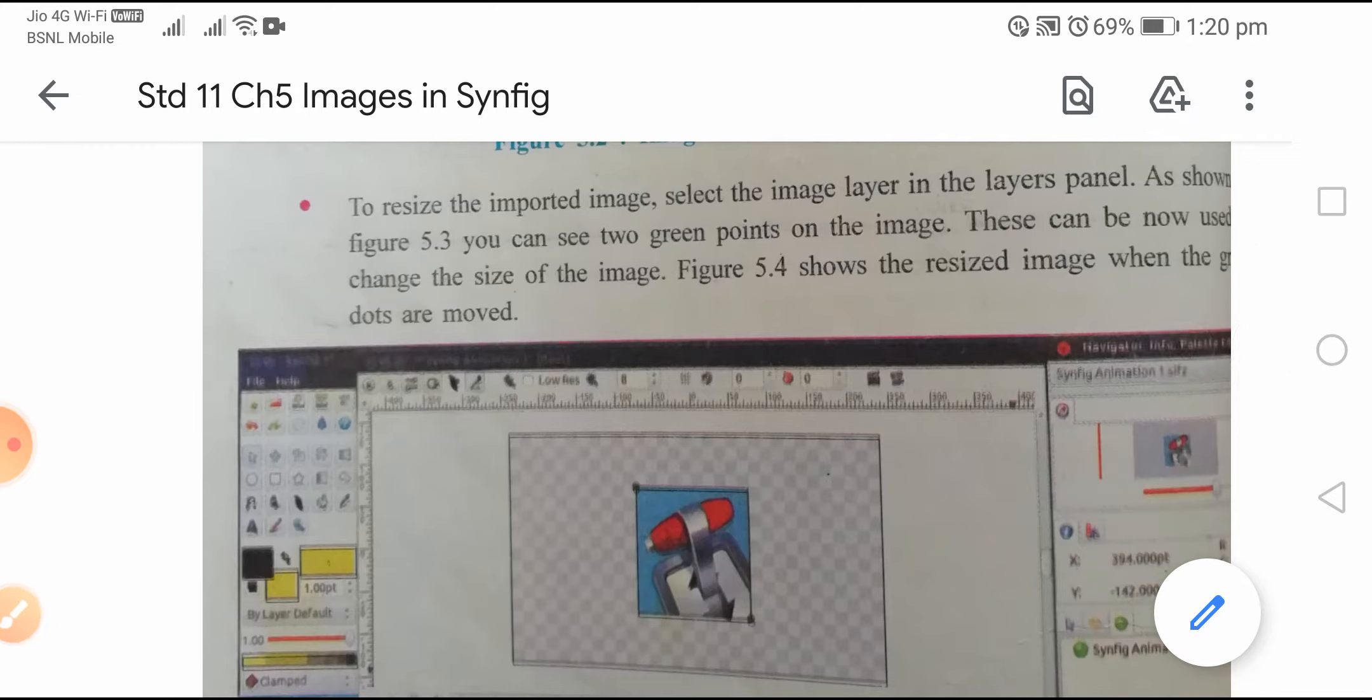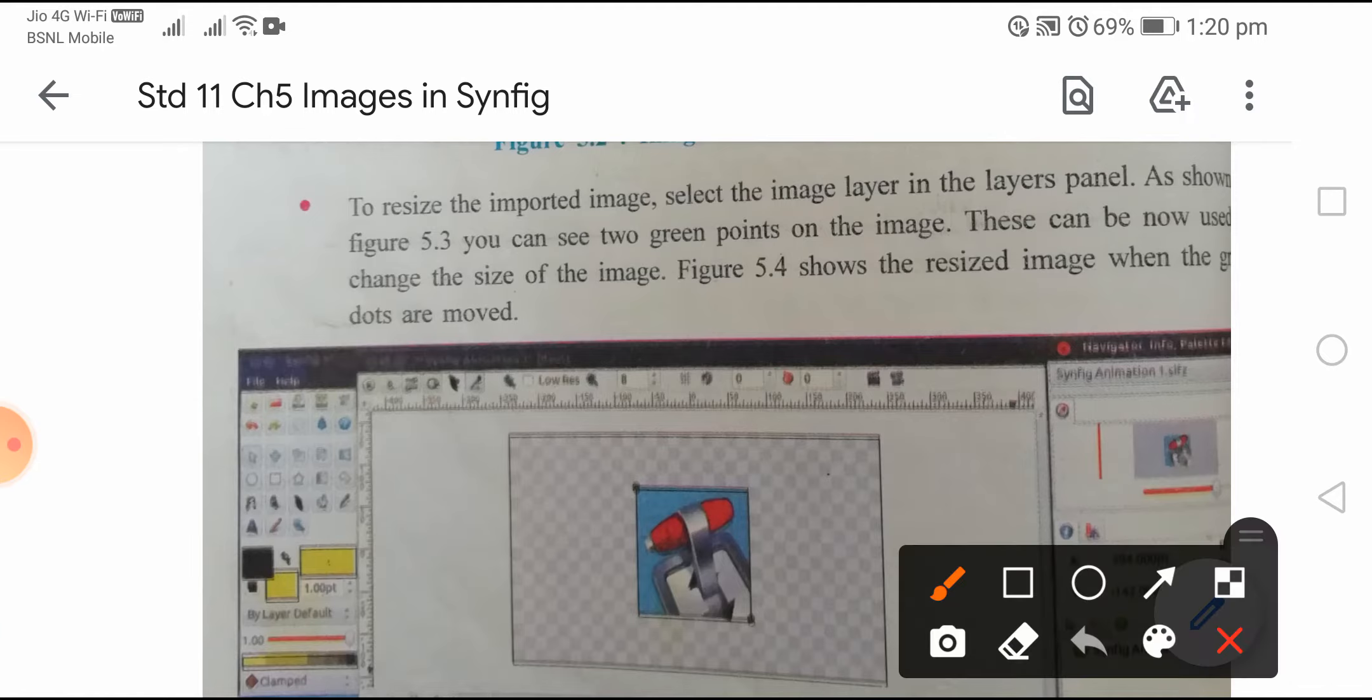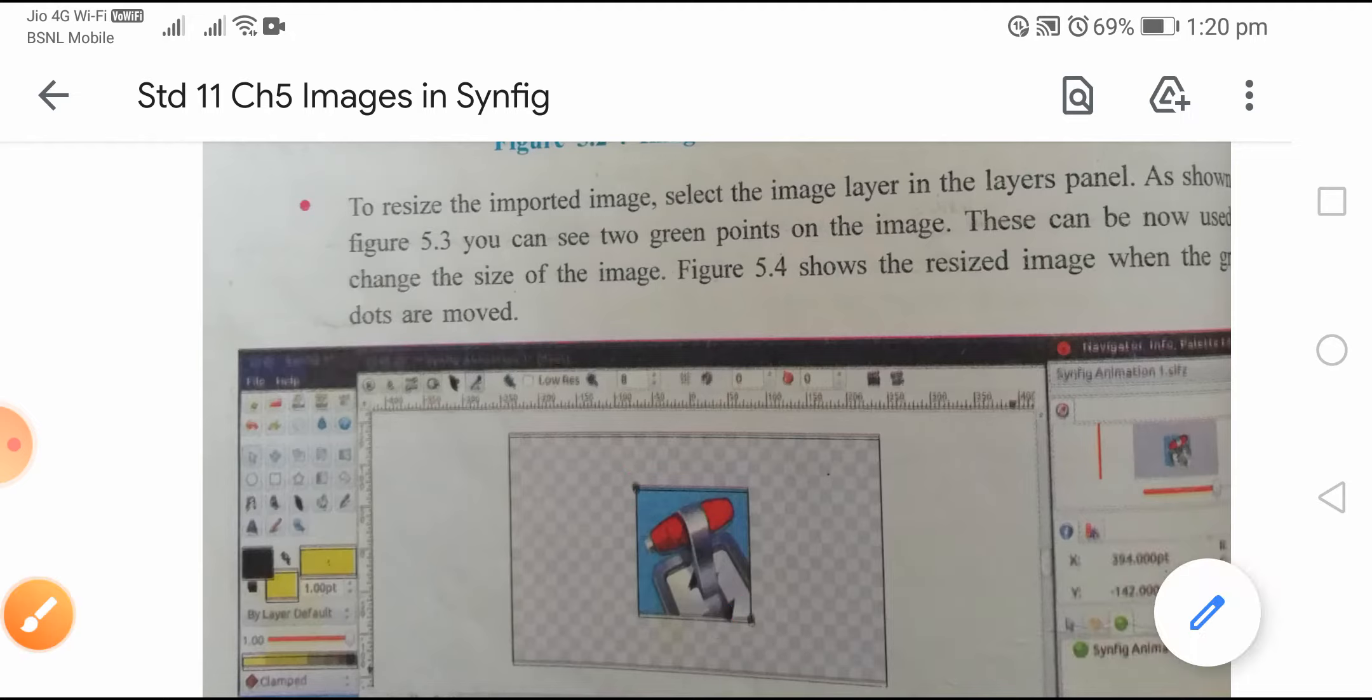You can see two green points on the image, one here and another here. These two green points can now be used to change the size of the image.